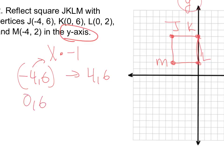Then I'm going to have 0, 6. Well, multiplying 0 times negative 1 is still 0, 6. Then I have 0, 2. Multiply, it's still going to be 0, 2.